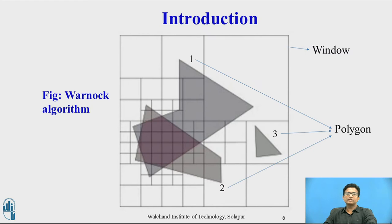In this diagram you can see we are having a window with three polygons, and polygon 1 and 2 are overlapping each other. Here we need to decide which surface is above and which surface is below. For that purpose we are dividing this window into four parts. Again, those four parts are recursively divided into four parts again. Then we are identifying the relationship of this object and the window.